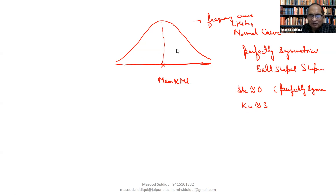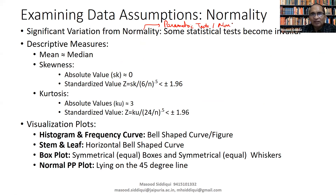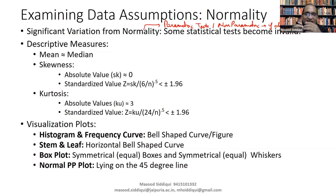Now we will discuss in more detail. Why is normality very important? Because some statistical tests become invalid. If our data is normal in nature, then only we can employ the parametric test; otherwise, we have to use a non-parametric test. For discriminant analysis, the assumption is that our data or variables follow normal distribution. So this is why normality is so important.